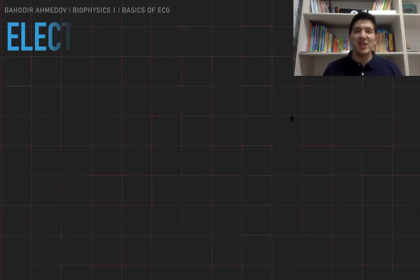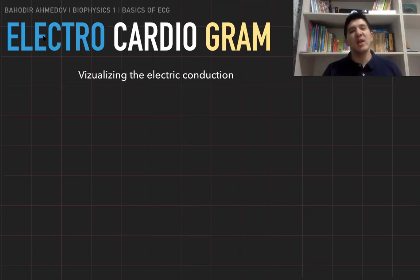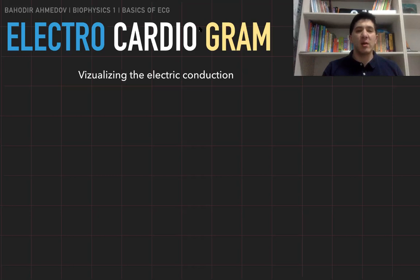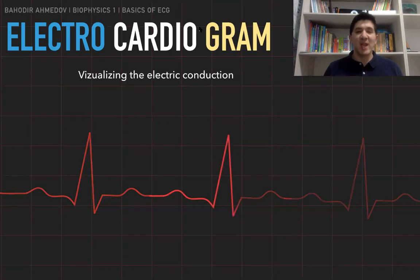The meaning of the ECG is coming from its name. The 'gram' stands for the visualization, 'electro' stands for the electric conduction, and 'cardio' stands for the heart. So the electrocardiogram means visualizing the electric conduction inside the heart. You've probably seen this kind of animation before — we call this the ECG: visualizing the electric conduction of the heart.